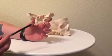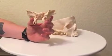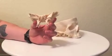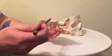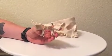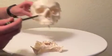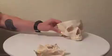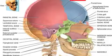The sphenoidal sinuses are paired sinuses within the body of the sphenoid bone. They are inferior to the sella turcica. Like all paranasal sinuses, they connect to the nasal cavity via small openings.